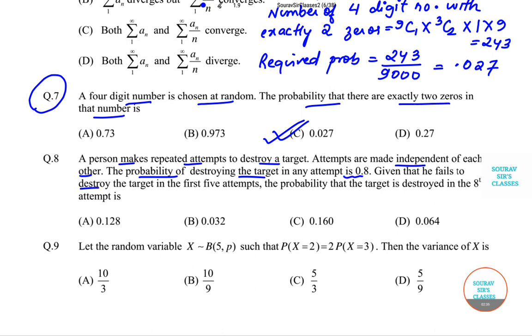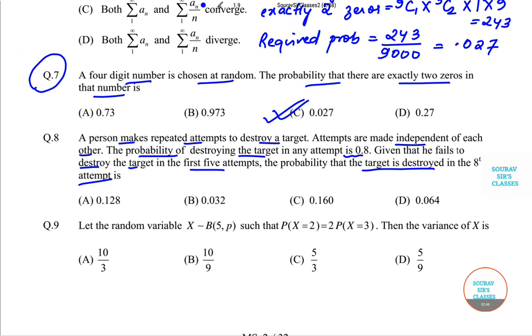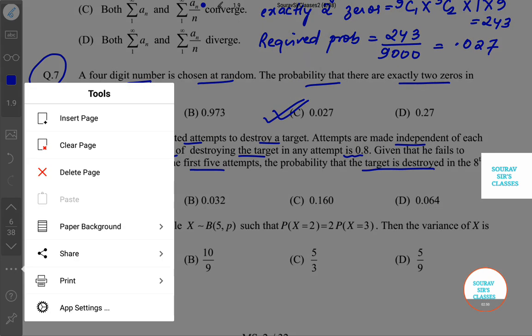Given that he fails to destroy the target in first five attempts, we need to find the probability that the target is destroyed in the eighth attempt.